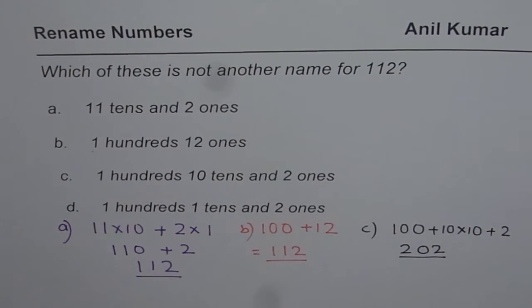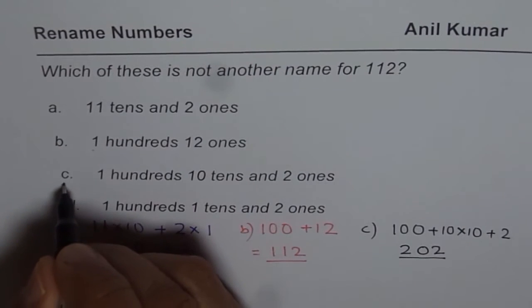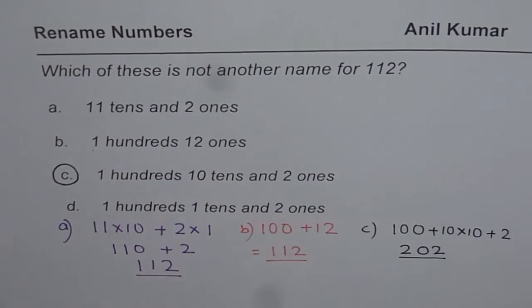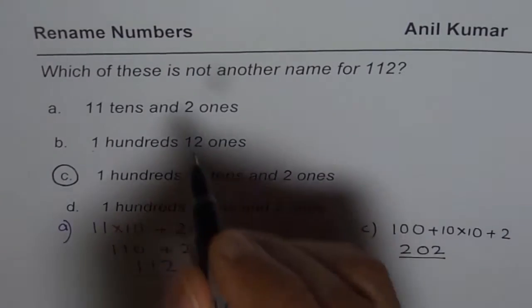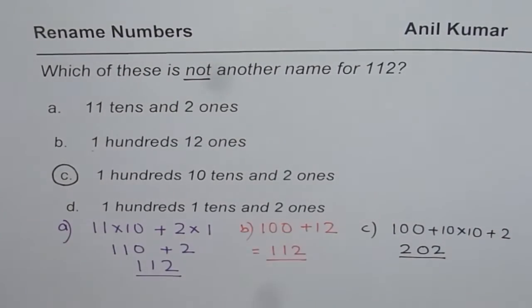Now, 202 is not same as 112 and therefore C is the answer. It is not, the question here is, it is not another name.